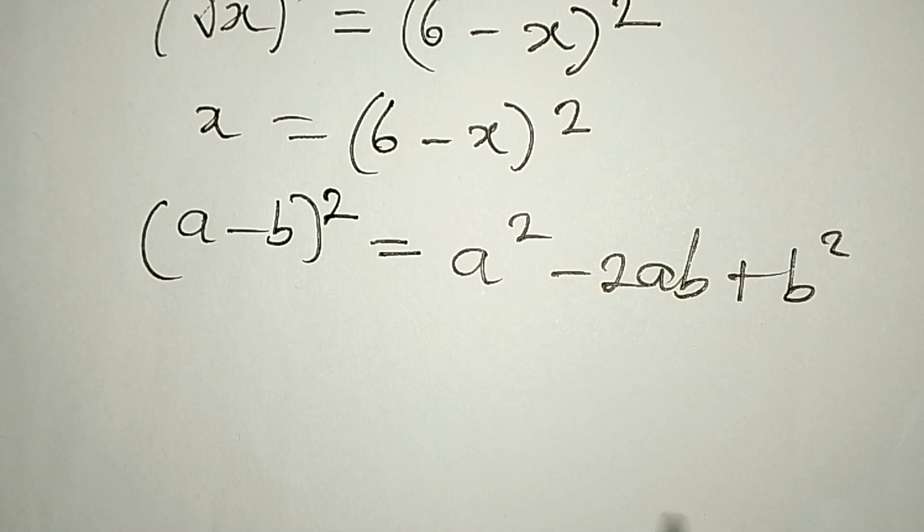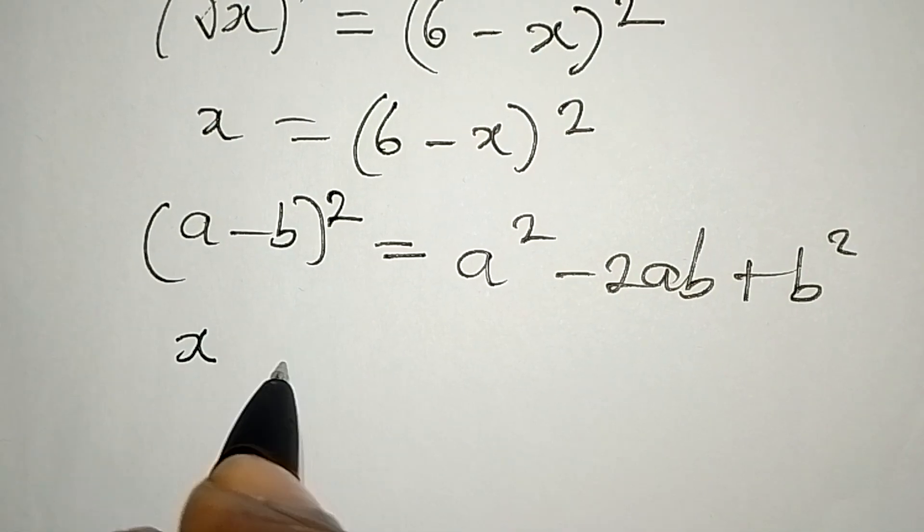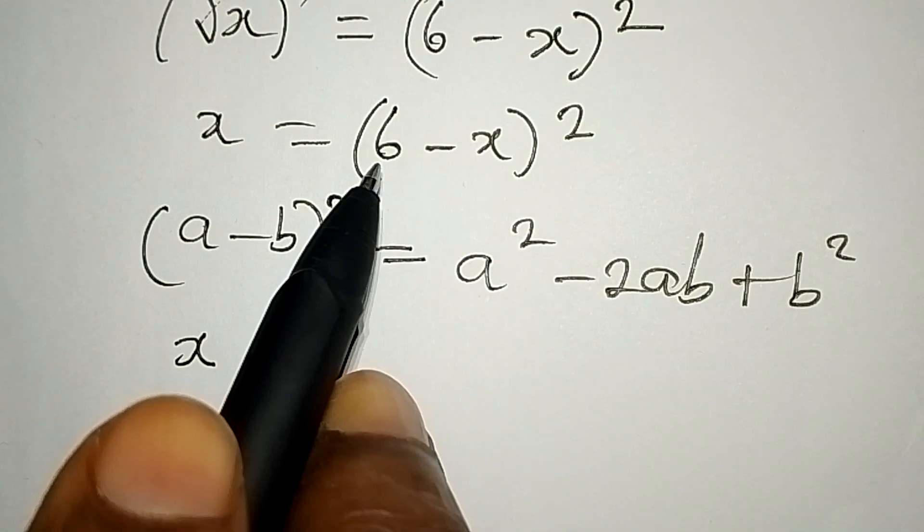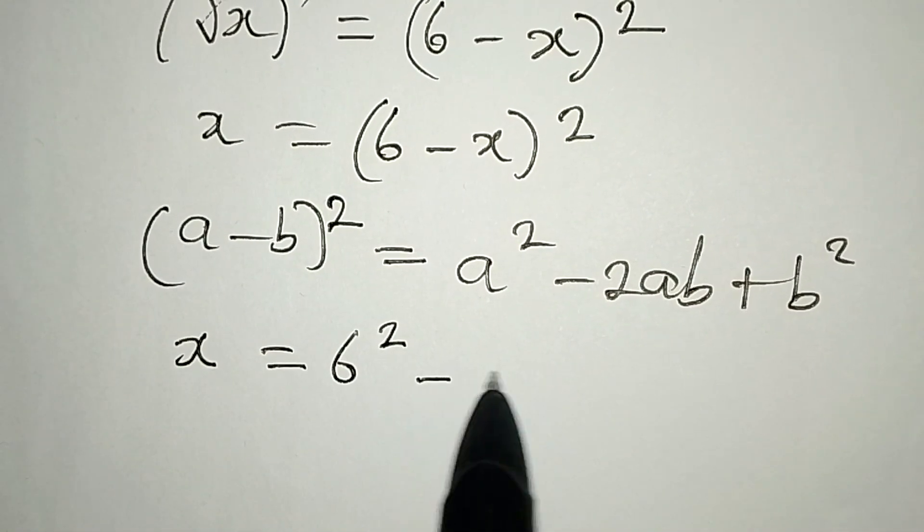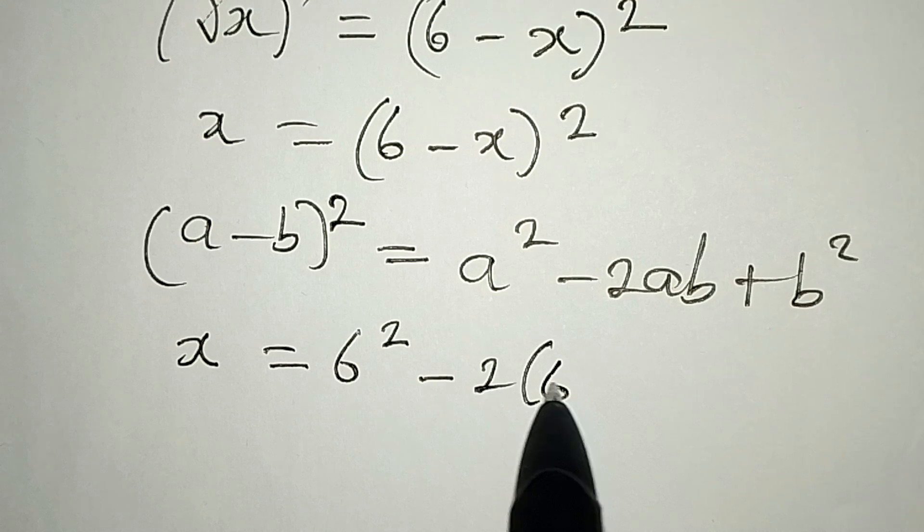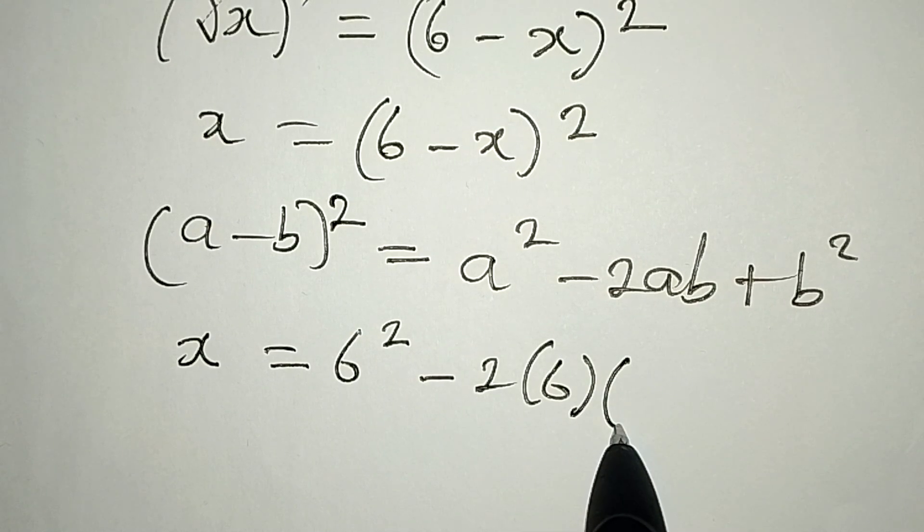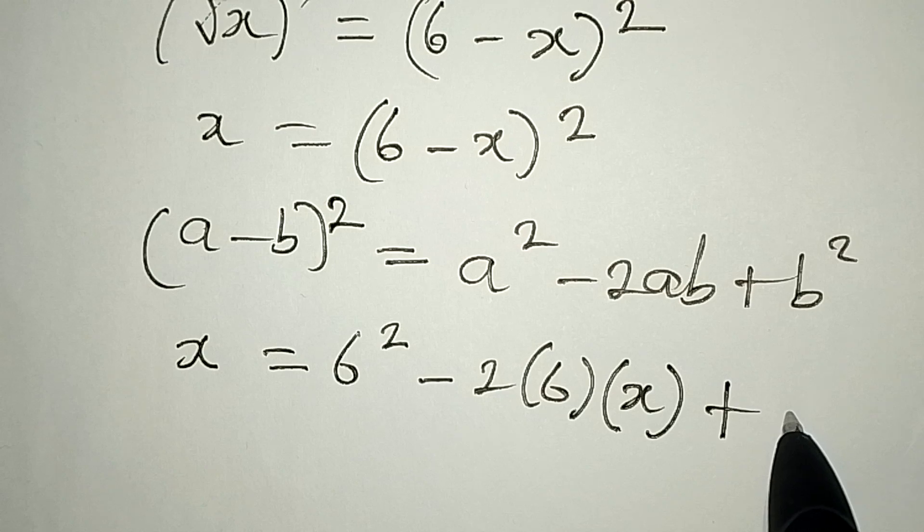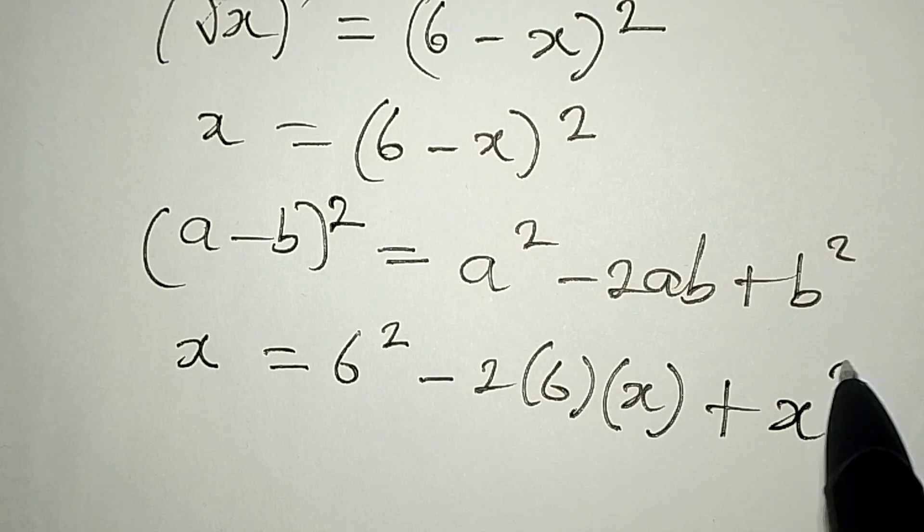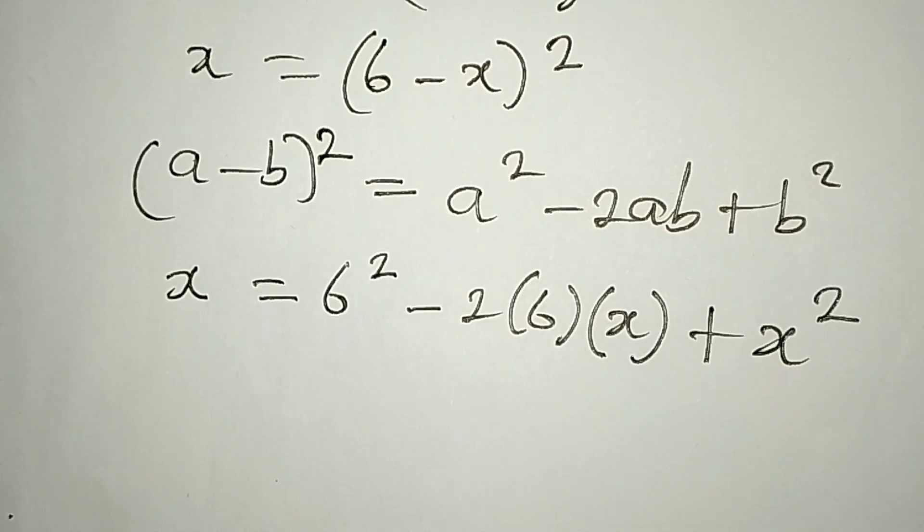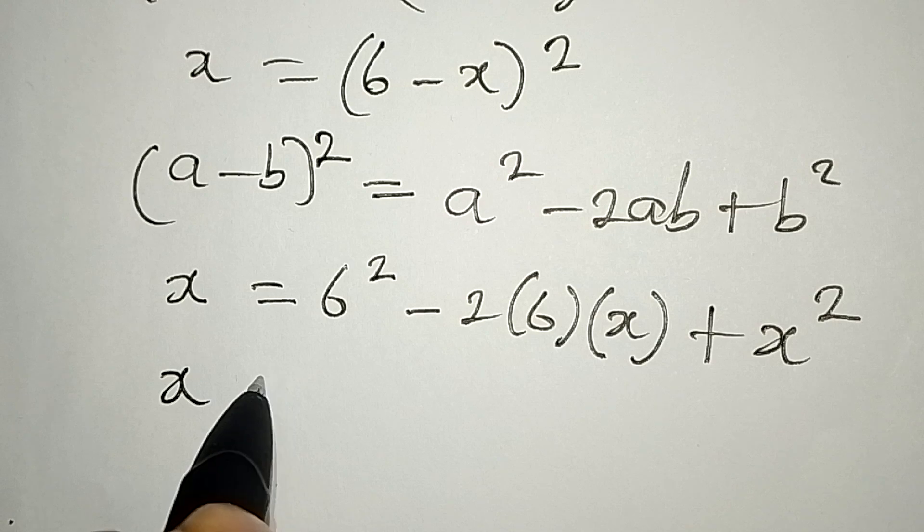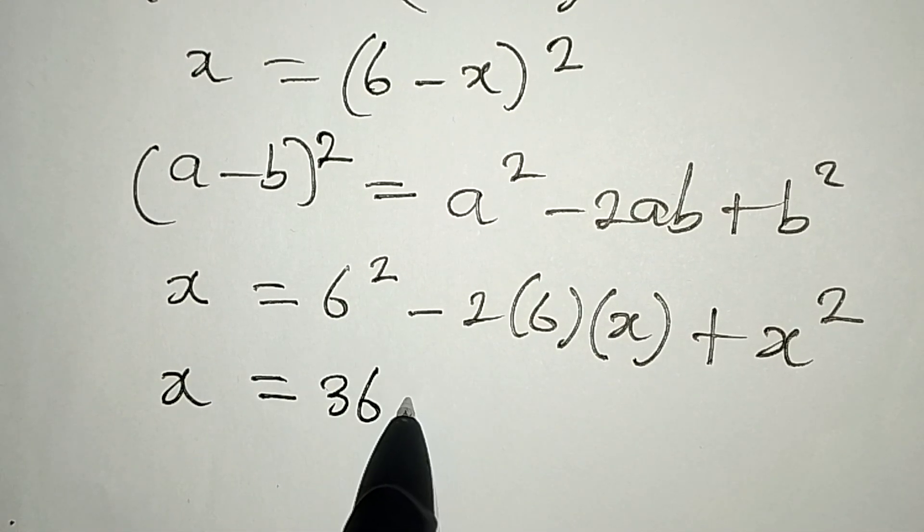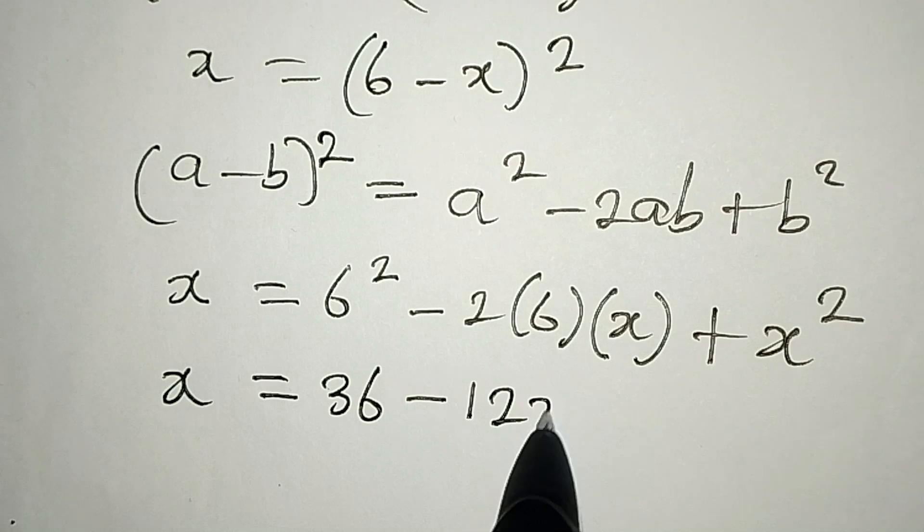So I'm going to have x here and it will equal a², which is 6², minus 2 times 6 times b, where b is x, then plus b², which is x². So we have x = 36 - 12x + x².